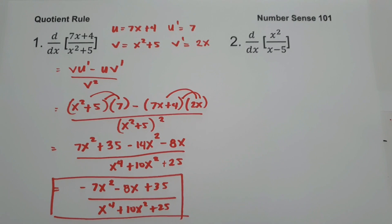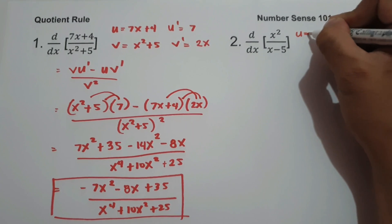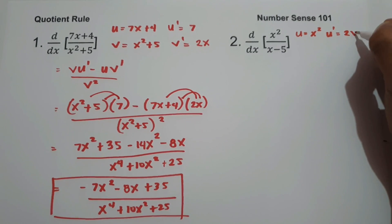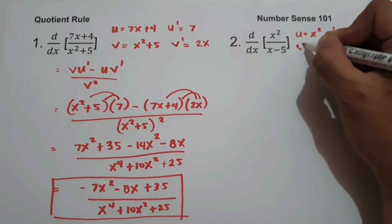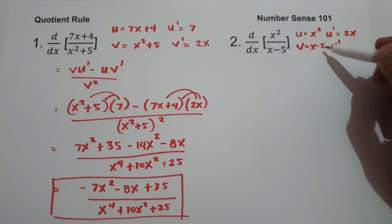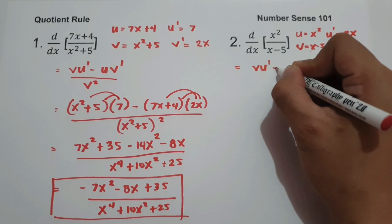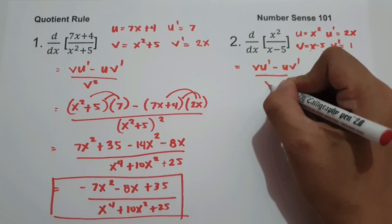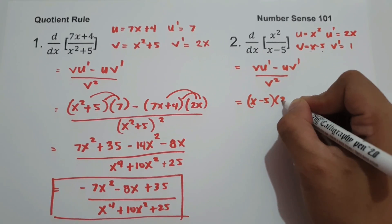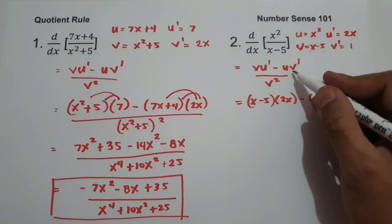On number 2, what is the derivative of x² over (x minus 5)? Let us identify the values: u is x², and u' is the derivative of x², which is 2x. Then v is (x minus 5), and v' is the derivative of (x minus 5), which is 1. Applying the formula v·u' minus u·v' over v squared: (x minus 5)·2x minus x²·1, all over (x minus 5) squared.